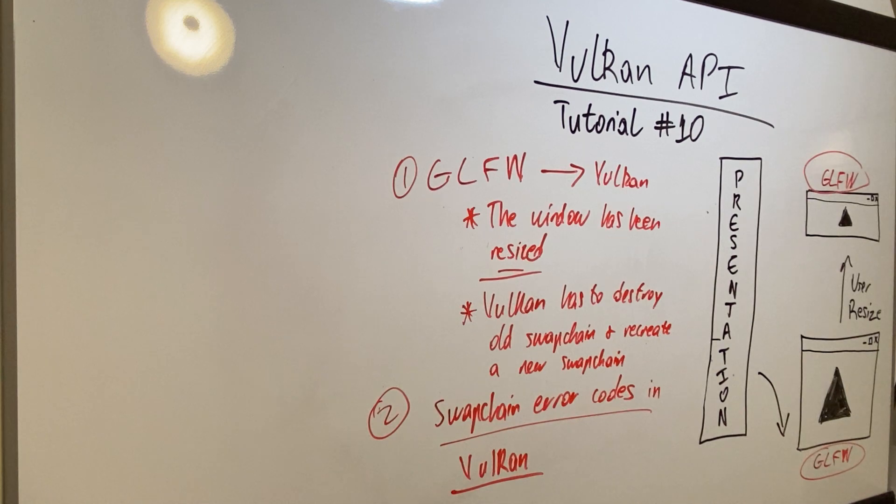And then also there are swap chain error codes in case there's an issue inside of Vulkan, and these error codes help the developer to process accordingly and manage the situation if something wrong happened in the system. So that is tutorial number 10.